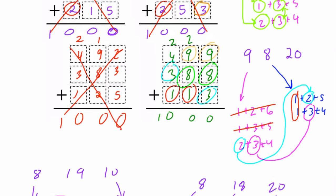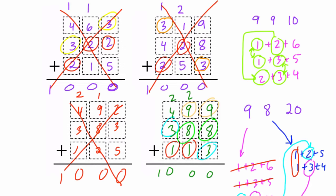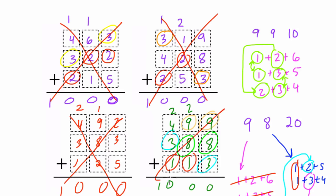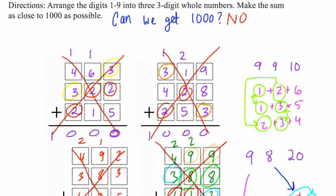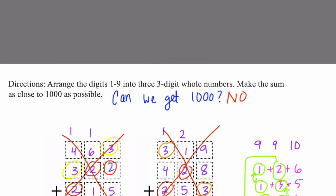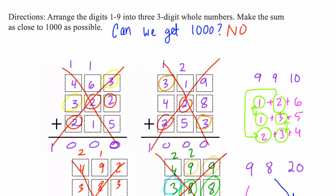All four ways of reaching 1,000 require repeating at least one digit. So it is not possible to arrange the digits 1 through 9, each used exactly once, into three three-digit numbers that sum to exactly 1,000. If you have a better or cleaner approach, please share it — this one feels messy. Thanks.